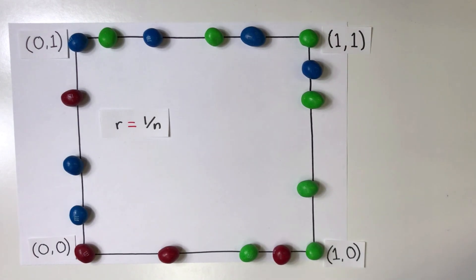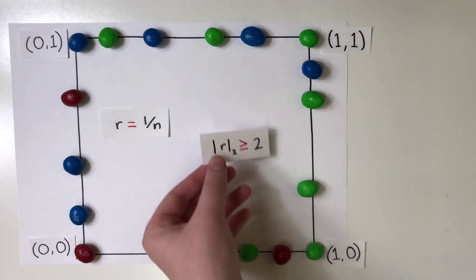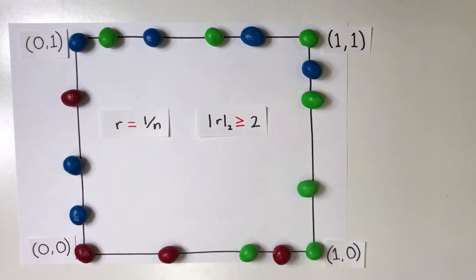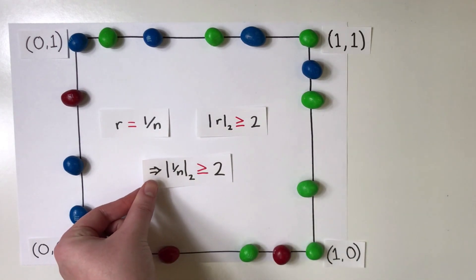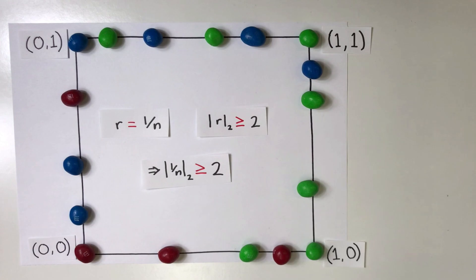There is some more complexity here that we don't have time to get into. But if r is the area of the red-green-blue triangle, then the 2-adic of r is greater than or equal to 2, this means that 2-adic valuation of 1 over n is greater than or equal to 2.